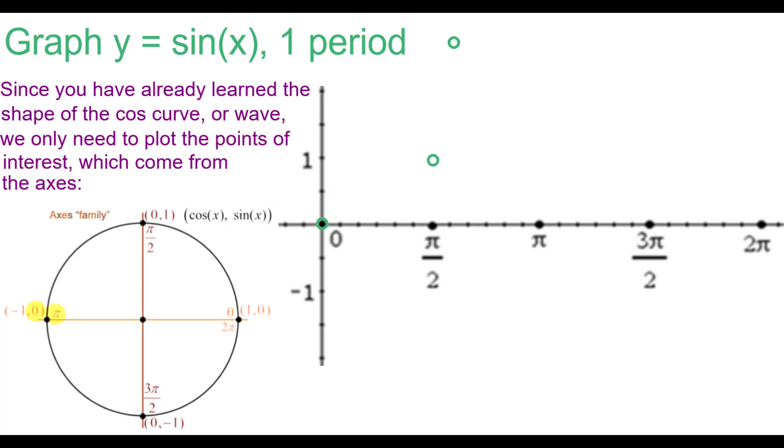The sine of π is 0, π comma 0. The sine of 3π over 2 is negative 1, so over 3π over 2, down 1. And the sine of 2π is back to 0.